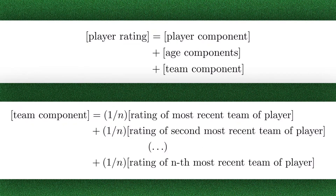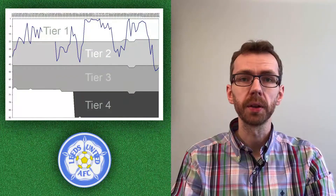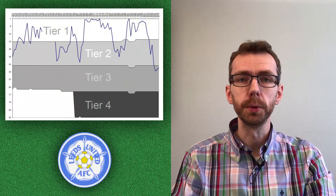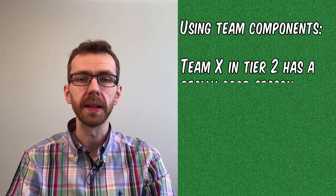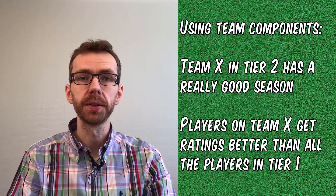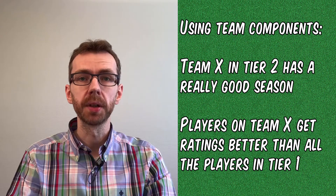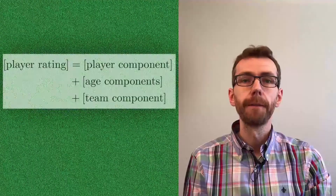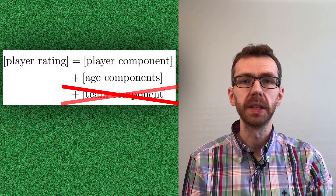One idea was to use team components instead of league components. Since in a given league there can be a significant difference in strength between teams, it could make sense to use teams in the same way we have used leagues. However, this approach has three problems. First, it would still give jumps in ratings when players move from one team to another. Second, some teams vary a lot in strength over time, so assuming constant team strength is not ideal. Third, a team in a lower league that had a really good season resulted in those players receiving very high ratings compared to players in the division above. For these reasons, team variables will not be explored further in this video.